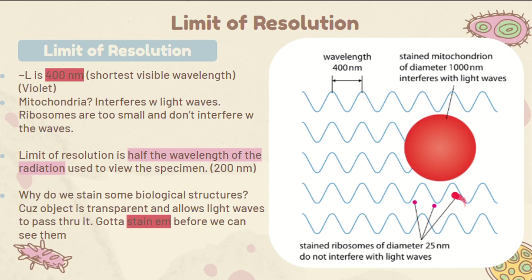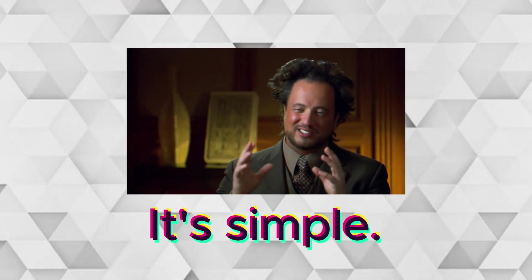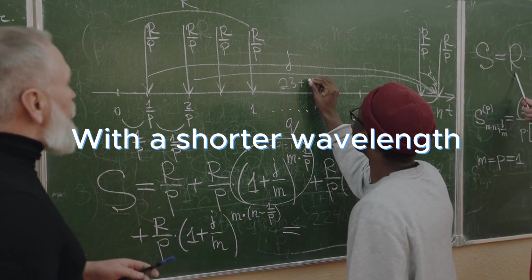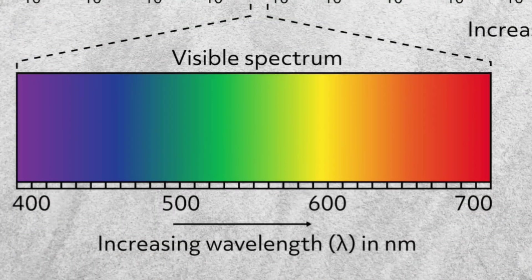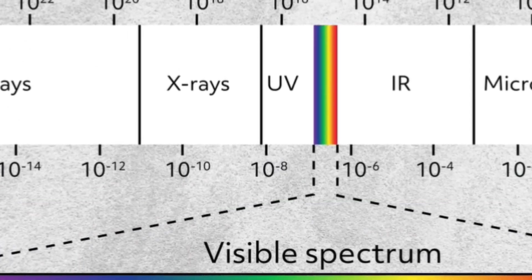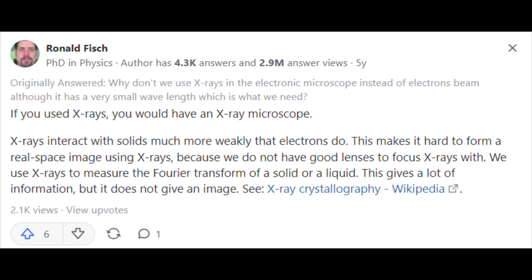How in the world do we view specimens smaller than 200 nanometers? It's simple — just use radiation with a shorter wavelength than visible light. So just use UV or X-rays, for example? They are excellent candidates, but it's not that straightforward.